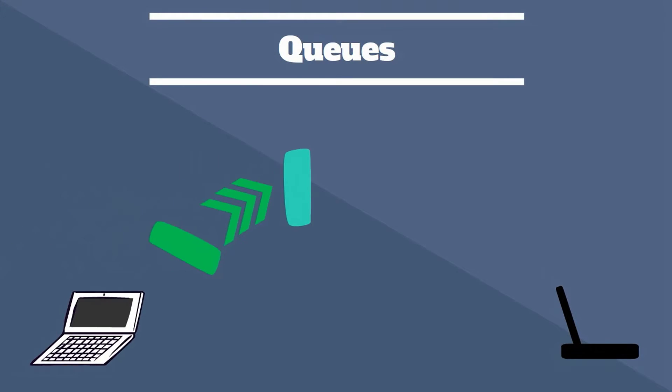Queues offer first-in, first-out message delivery to one or more recipients. While many recipients may get messages from the queue, each message is only processed once.